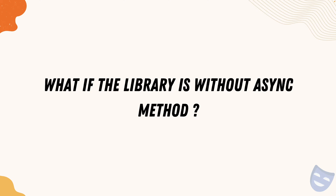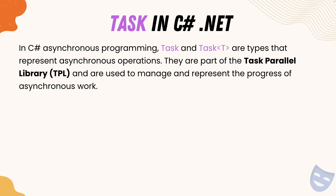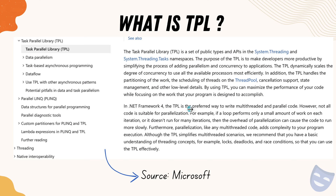Getting back to our content — what if the library is without an async method? How do we resolve this? Welcome to Task. Task is the actual answer to resolve this problem in C# asynchronous programming. Task and Task of type T are types that represent asynchronous operations. They are part of the Task Parallel Library and are used to manage and represent the progress of asynchronous work.